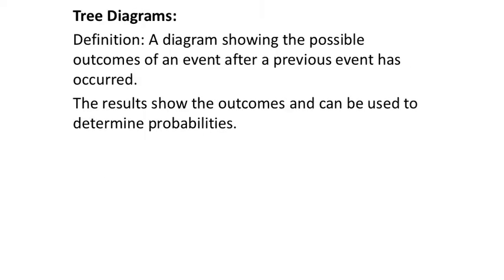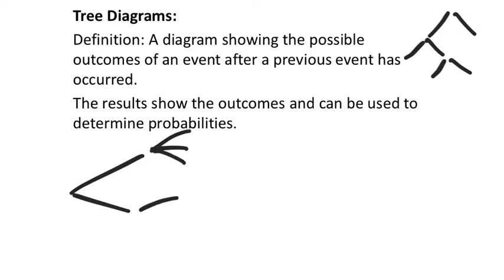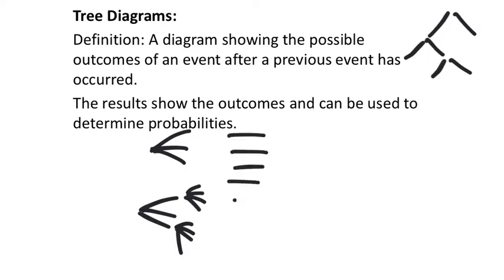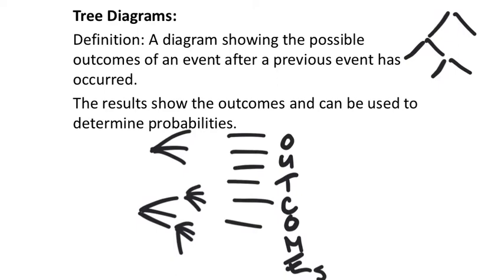We can use a tree diagram to identify all of the outcomes. This is different from the tree diagram we saw when we looked at factoring. Those tree diagrams worked their way down, but these ones are going to work themselves sideways — you get branches coming out, and at the end you have your outcomes. However many outcomes there are will tell you the denominator of the fraction when we look at probabilities.